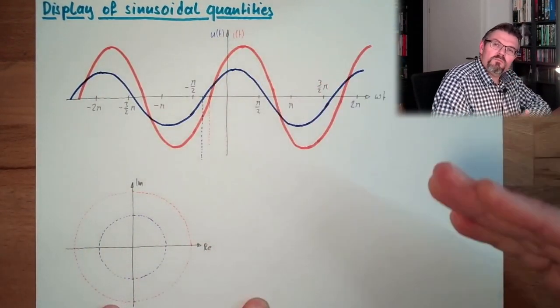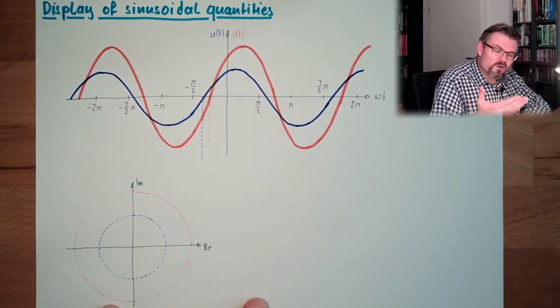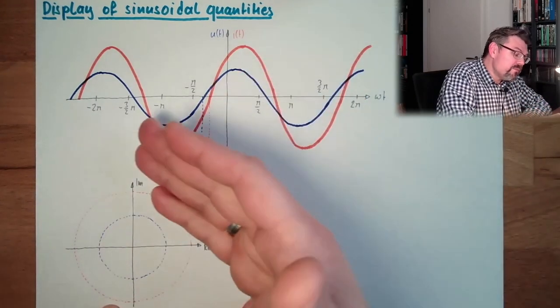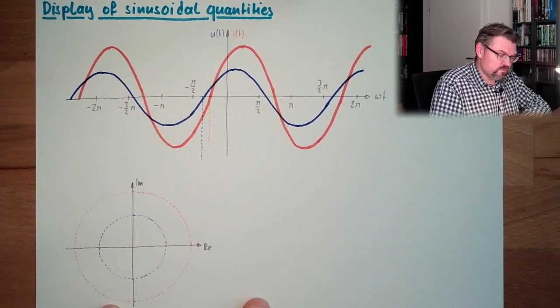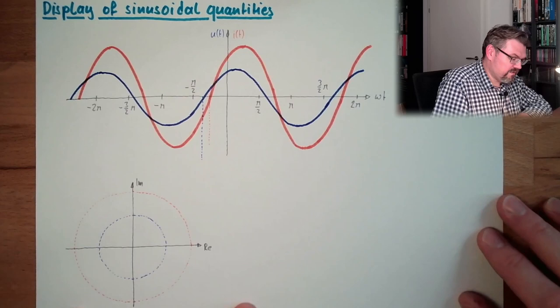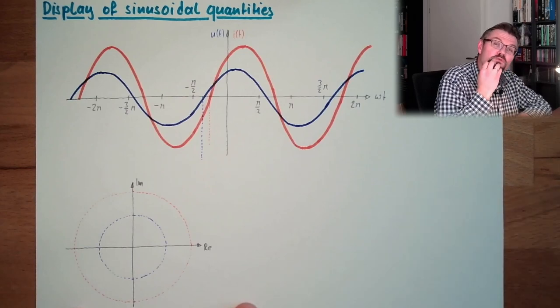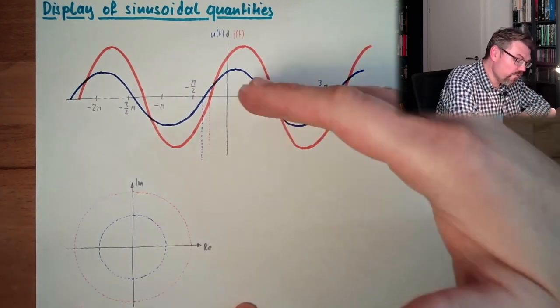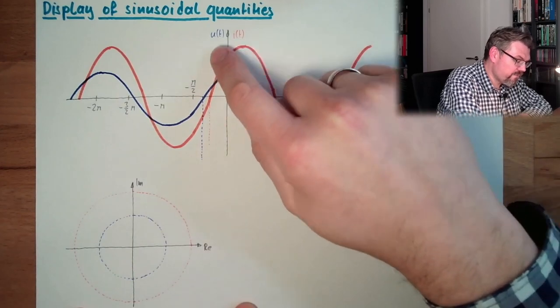This red line shall be a sinusoidal quantity, a current, and the blue line shall be a voltage. This is why I named U and I. Again, I'm using the reverberations which are usual here in Europe, or at least in Austria, where I'm coming from.